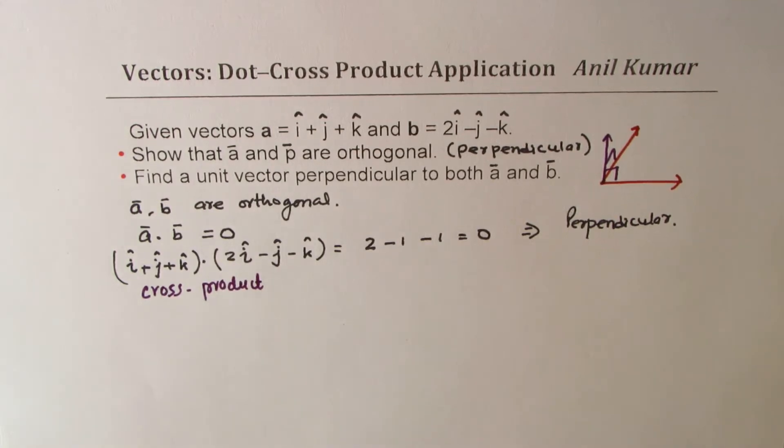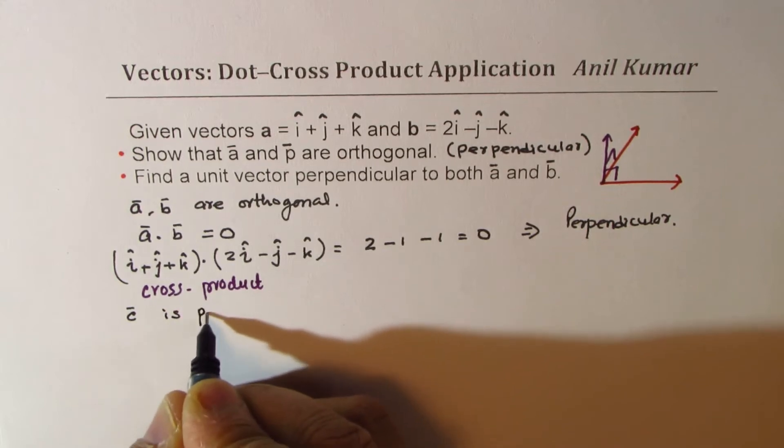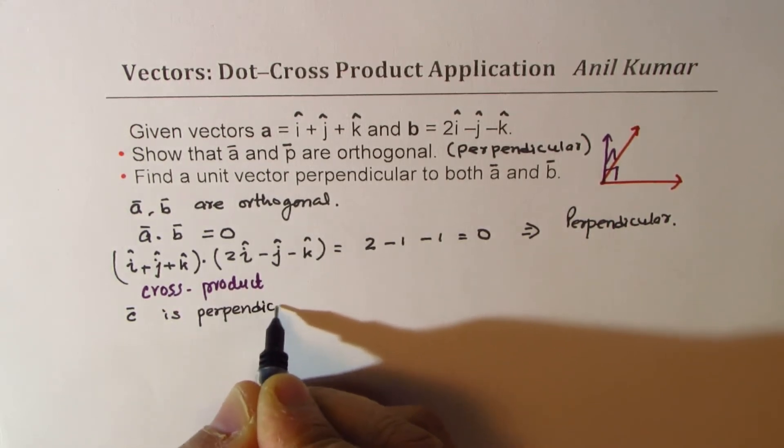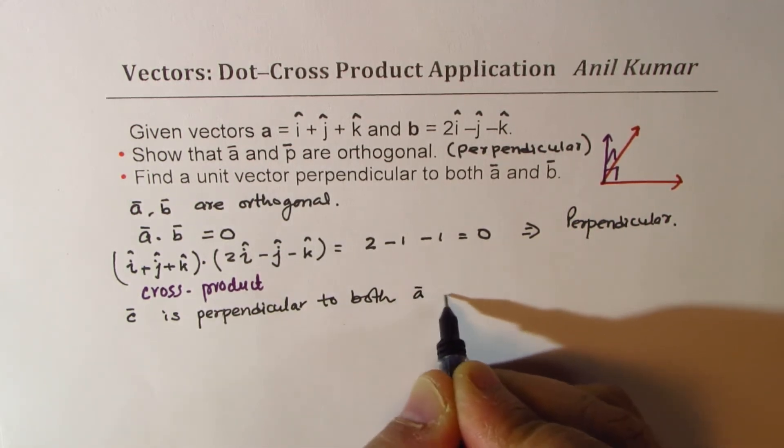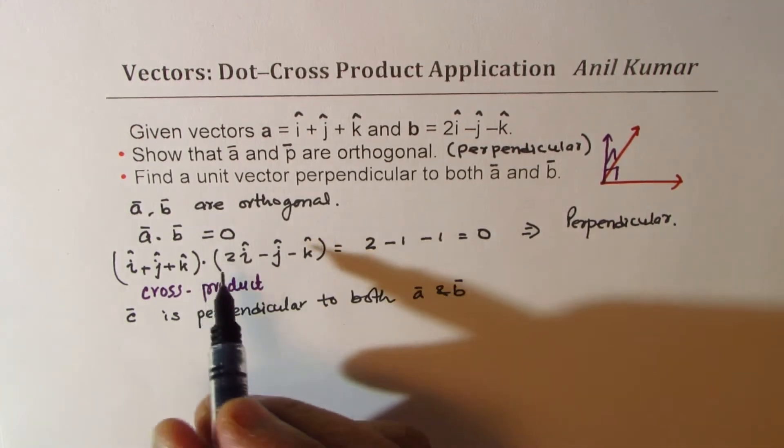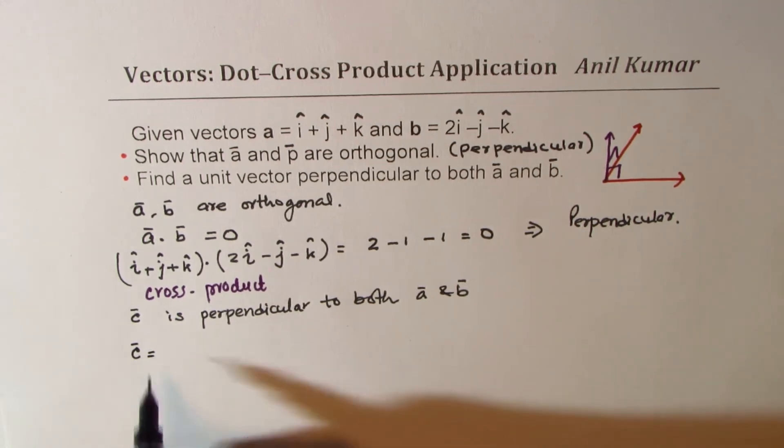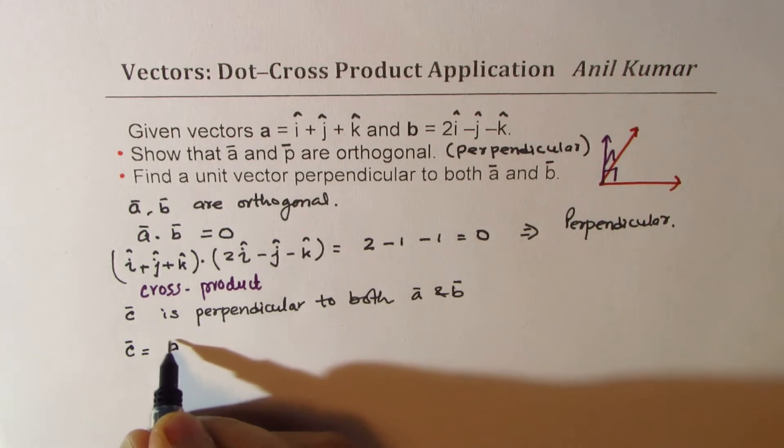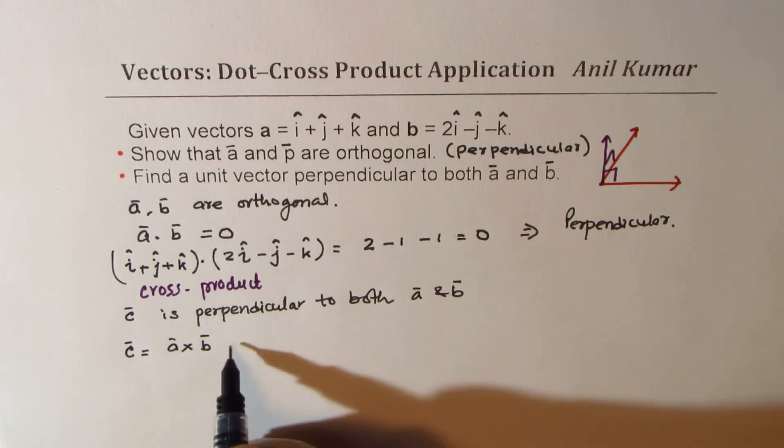So to find that vector which is perpendicular to both, we need to do cross product. You could also find perpendicular vector using dot product, I'll provide you a link for that, but simpler to do cross product to find a vector perpendicular to both. So let us say vector c is perpendicular to both a and b, so in that case we need to find cross product.